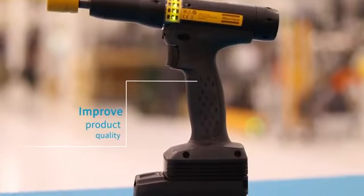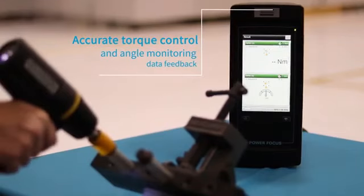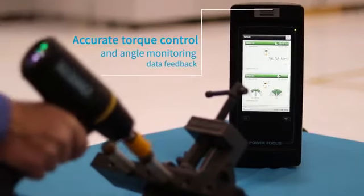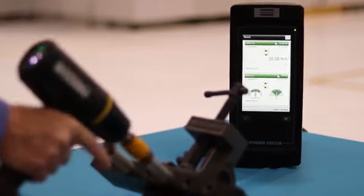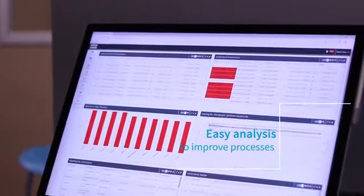The SRB and TBP will help improve the quality of your products. Accurate torque control and angle monitoring data feedback, error detection, and tightening data can be reported to ToolsNet 8 for easy analysis to improve processes.